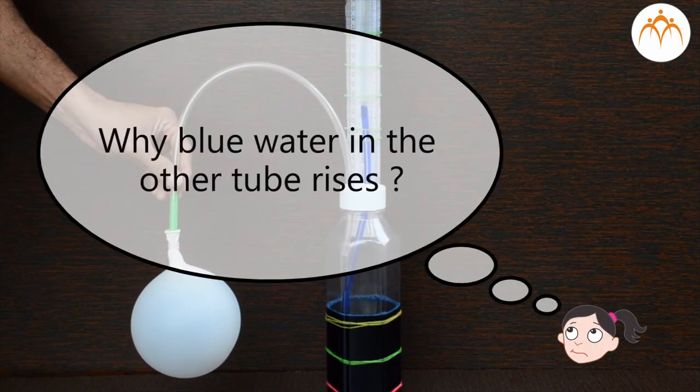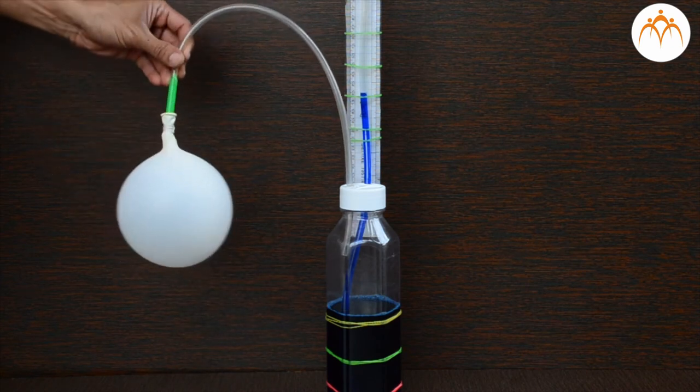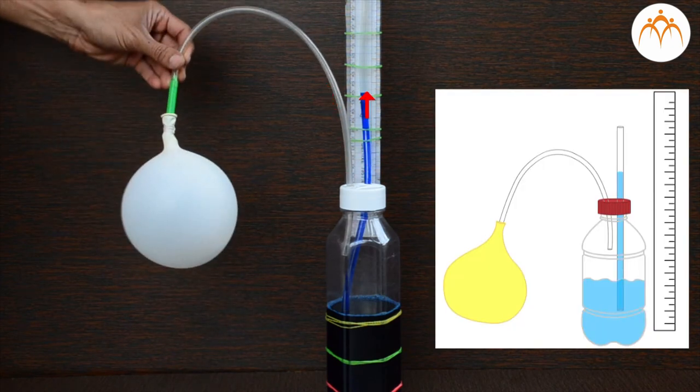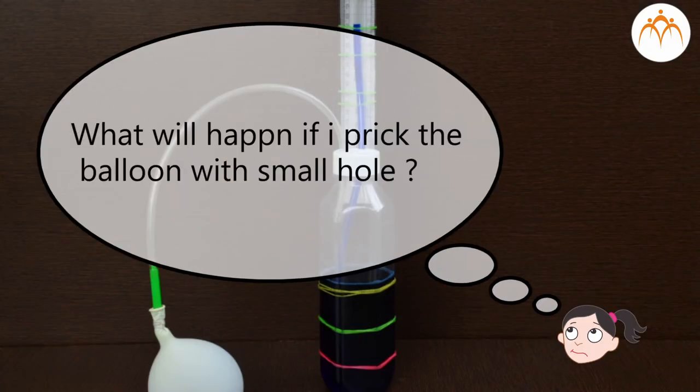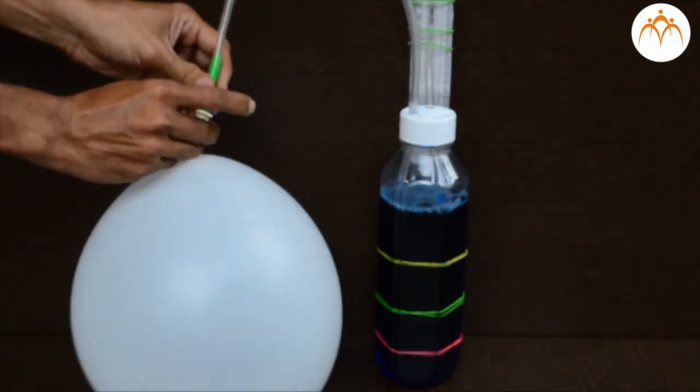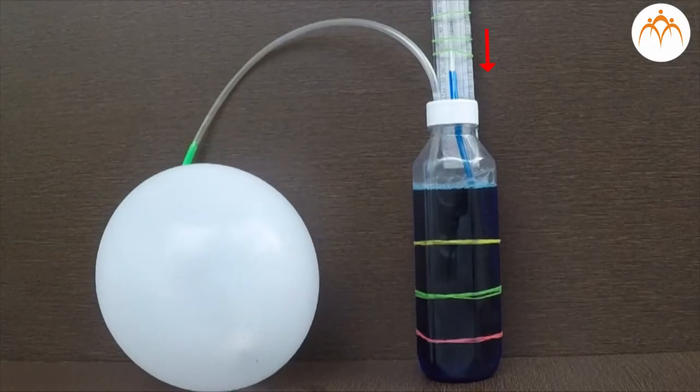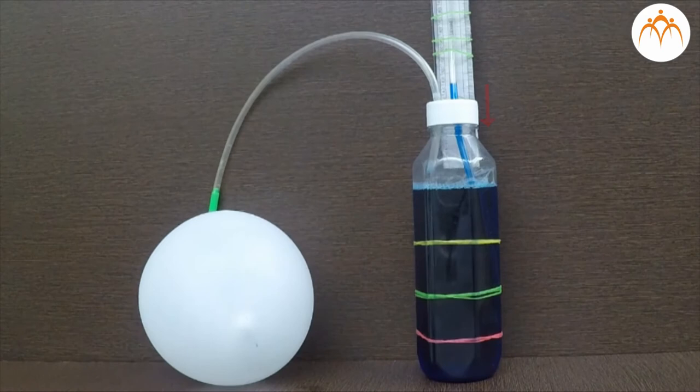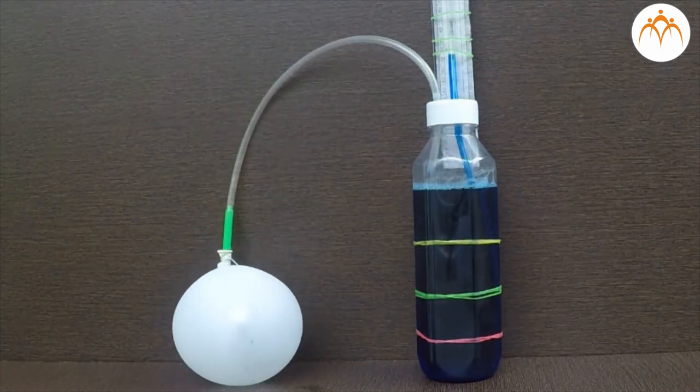Why does blue water in the other tube rise? Air from the balloon pushes the air inside the bottle. This air inside the bottle then pushes the water. What will happen if I prick the balloon with a small hole? As air escapes, the pressure inside the balloon reduces. This also brings the level of water in the tube down. When all the air has escaped, blue water is back to its normal level.